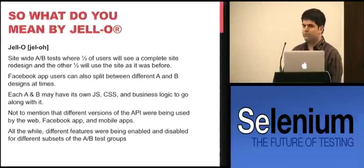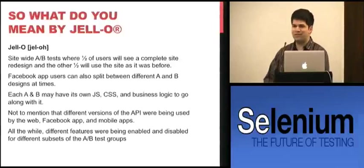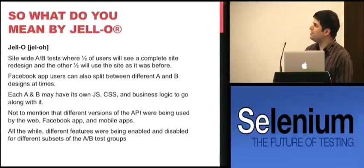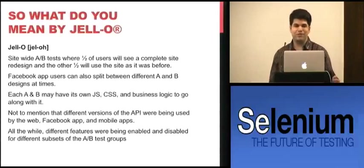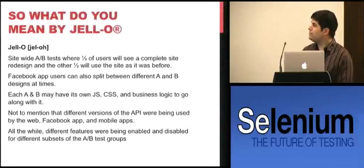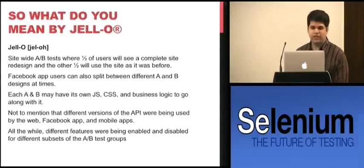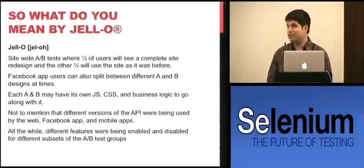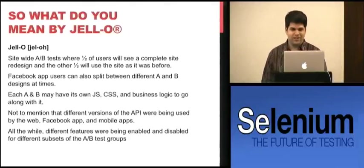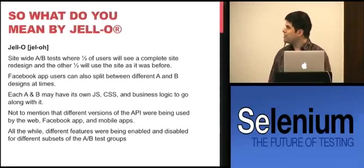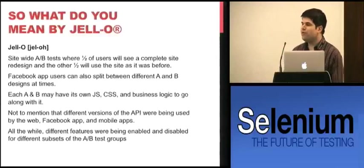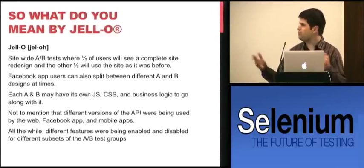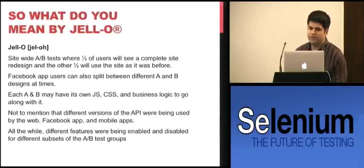The problem at hand: we're an agile startup with a rapidly experimental website. By 'jello' I mean we frequently have A/B tests where we completely redesign the site and expose half to one version, half to another. Each A and B has its own JavaScript and CSS, and there's an API layer beneath that with different versions being called by different A's and B's. People are constantly enabling and disabling features for certain subsets of groups — so if you write an automation script that expects something, you're completely hosed. You never know what to expect.